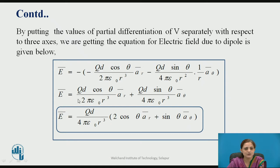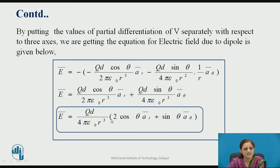E-bar equals minus of (minus Qd cos theta upon 2 pi epsilon naught R cubed) a-bar_R minus (Qd sin theta upon 4 pi epsilon naught R squared) times (1/R) a-bar_theta. Solving this, the expression for the electric field due to the dipole is: E-bar equals Qd upon 4 pi epsilon naught R cubed times (2 cos theta a-bar_R plus sin theta a-bar_theta).